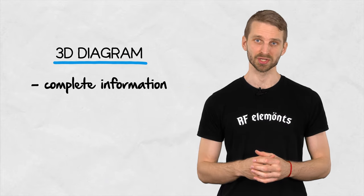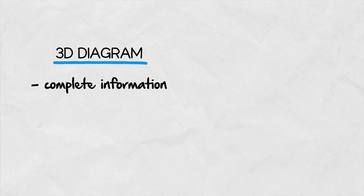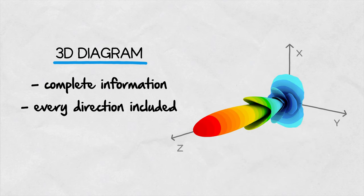The 3D radiation diagram provides a complete information about the gain of an antenna, since it shows the gain in every possible direction in 3D space. You cannot do better than that. This is why it is generally more useful than the 2D plot, which is obtained from the 3D plot anyway.